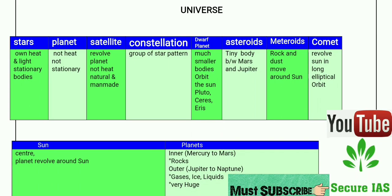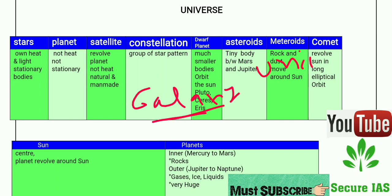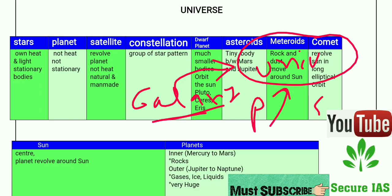The universe consists of all space and time and their contents, including planets, stars, galaxies, and all other forms of matter and energy. Galaxies also come under the universe — the universe is bigger, galaxies come under it, and planets and stars also come under the universe.